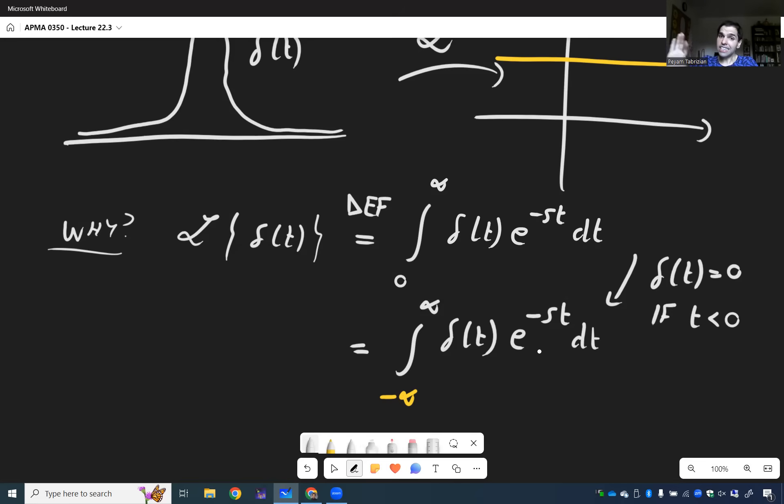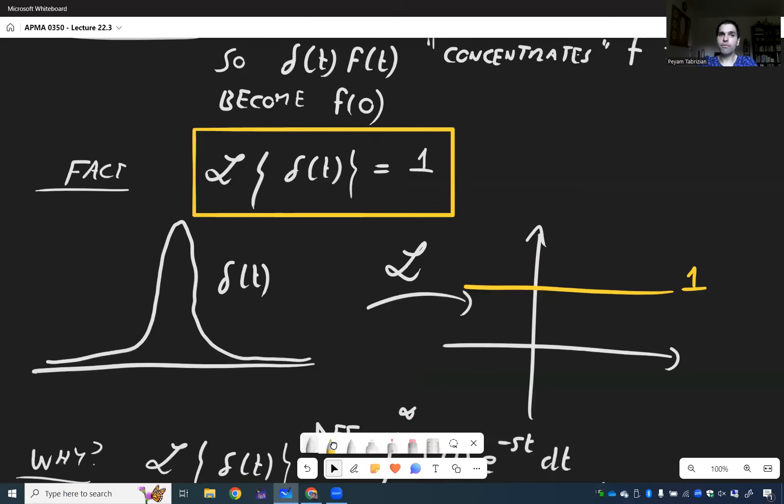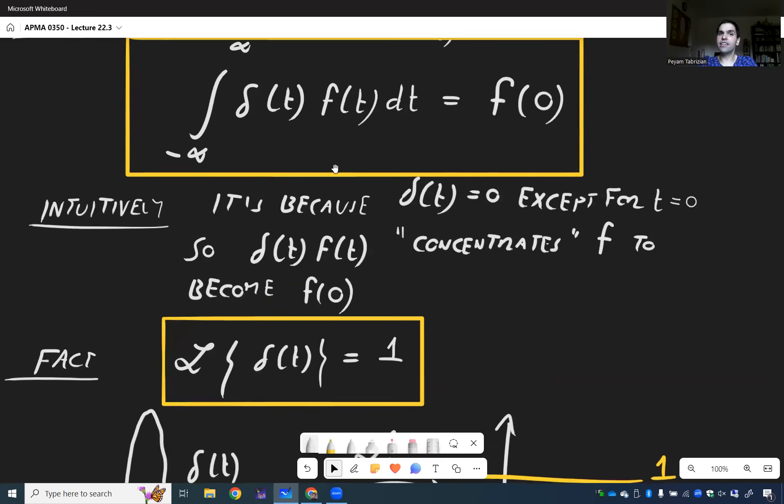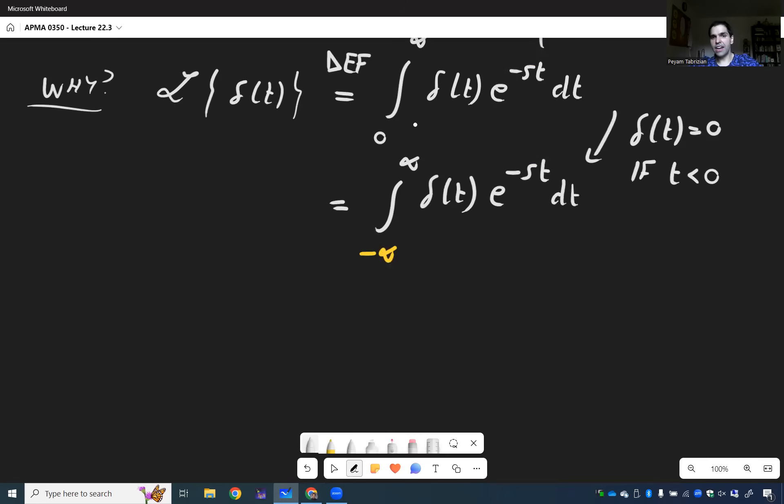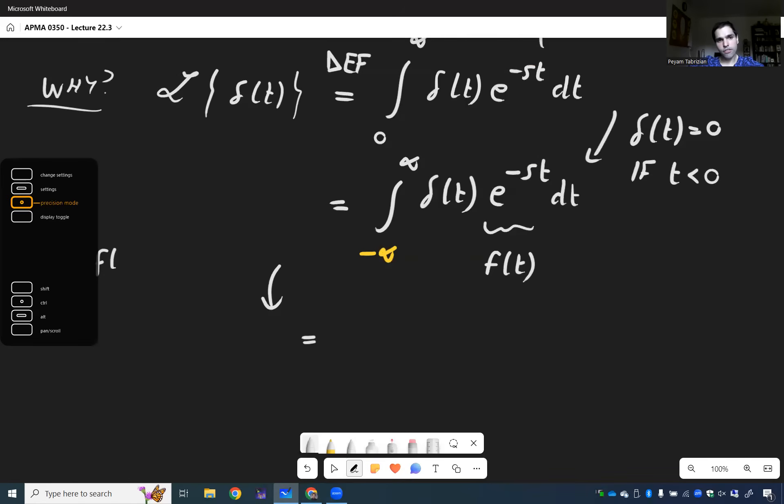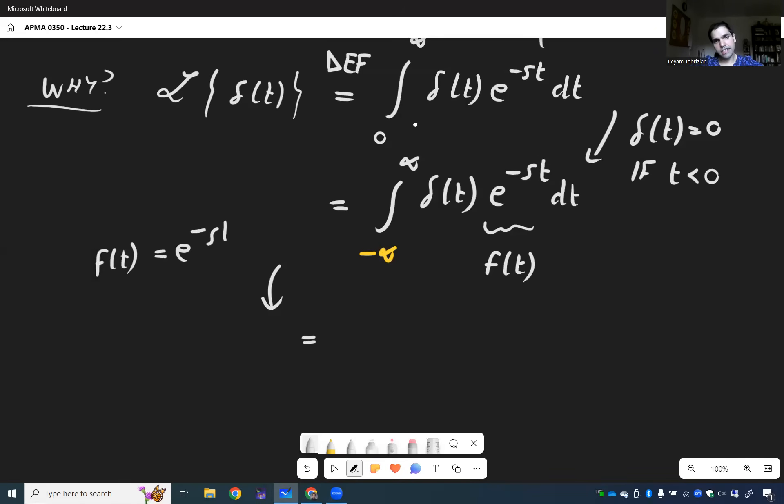And notice this is precisely the same form as the fact above, because we multiply Dirac delta by a function to get the value at zero. So this is delta(t) times f(t), where f(t) is e^(-st). So now you can use the fact. So this becomes f(0), and so this becomes e^(-s times 0), which becomes one.